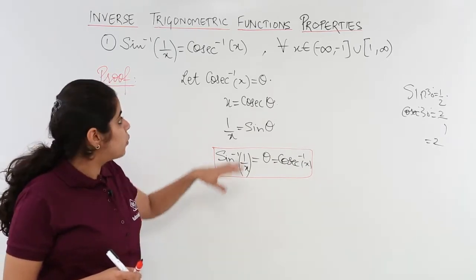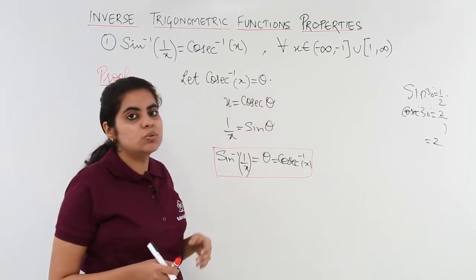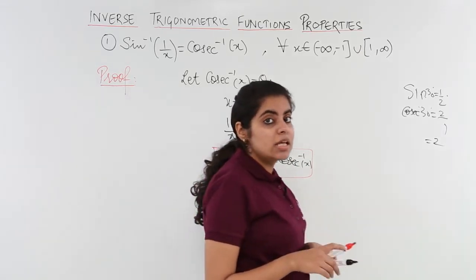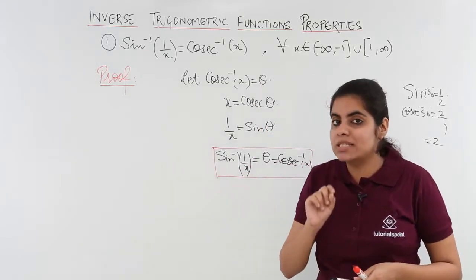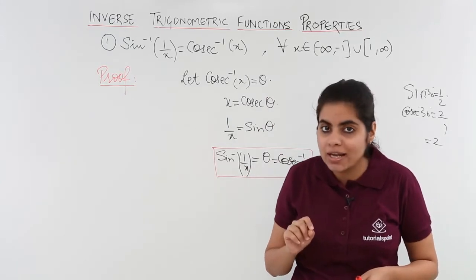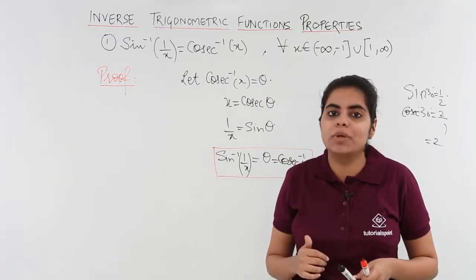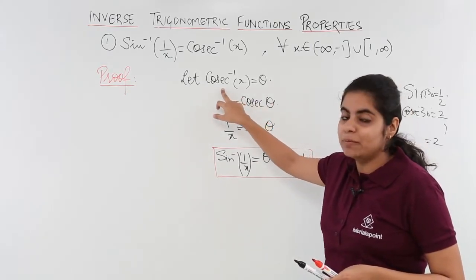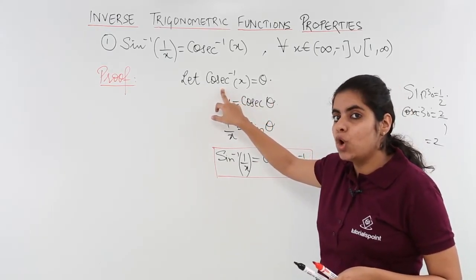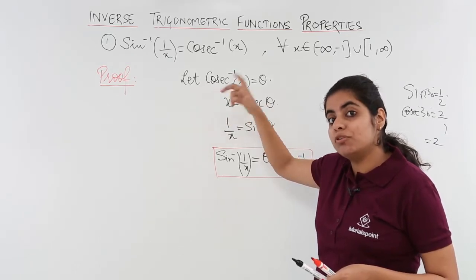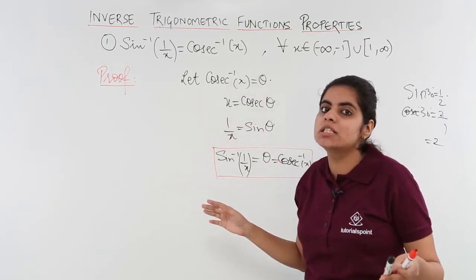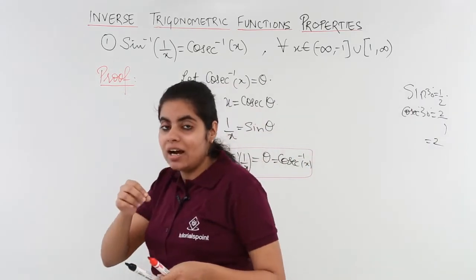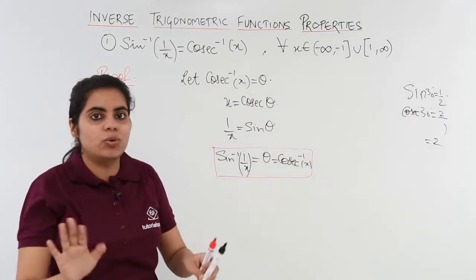The second thing. If cosecant inverse x is equal to theta, that means what? That means my angle should be such that I should not have 0 in the denominator. You know that if I have 0 in the denominator, that means sin 0 is 0. Cosecant 0 is 1 upon sin 0 which is not defined. So I need to take care that my theta is such that 0 is not there.